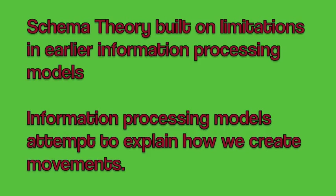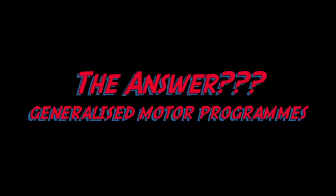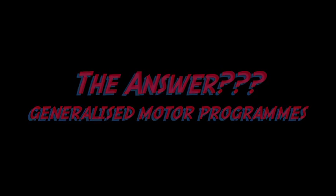Schema Theory argued that people don't learn specific movements and store these separately in the brain as individual motor programs, as had been theorized up until that point. Schema Theory says that we create generalized motor programs for a skill. We do this through exploring the movement — specifically, we learn the ways in which variations of the same skill are related.